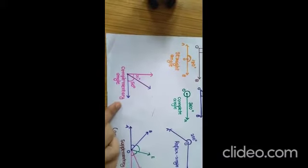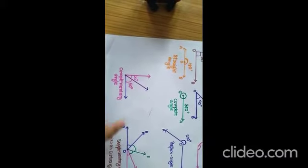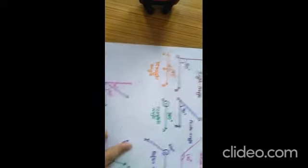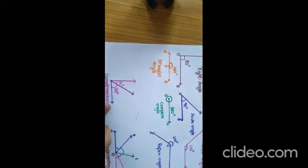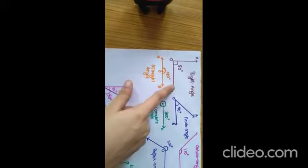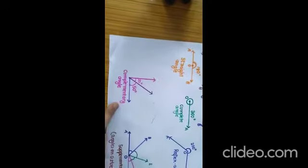Complementary angles. When two angles are joined together and they form 90 degrees, they are called complementary angles.